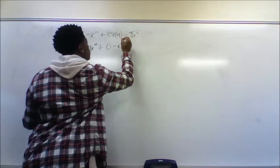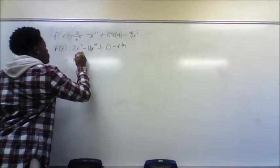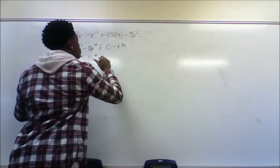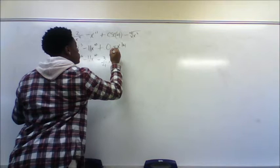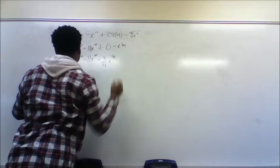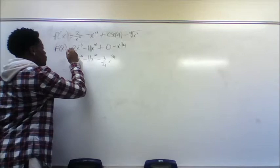Using the power rule on the remaining terms, you bring the exponents down, and the 4th root of x cubed becomes x to the 3 over 4, so its derivative comes down accordingly. And this is the final answer for this problem.